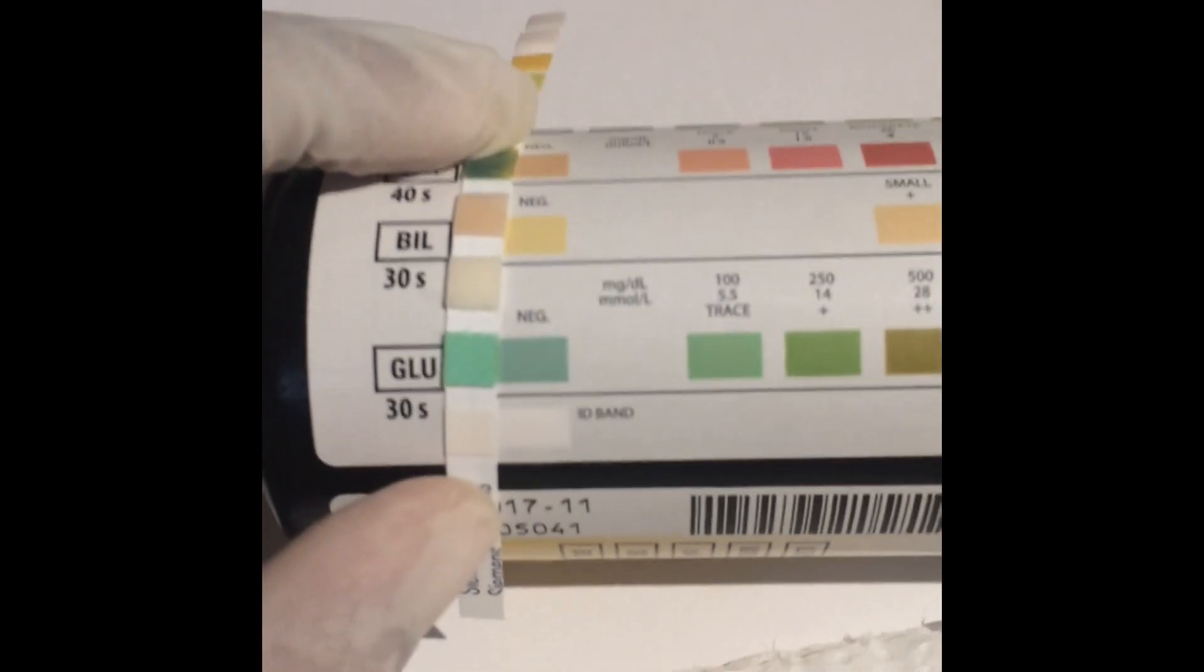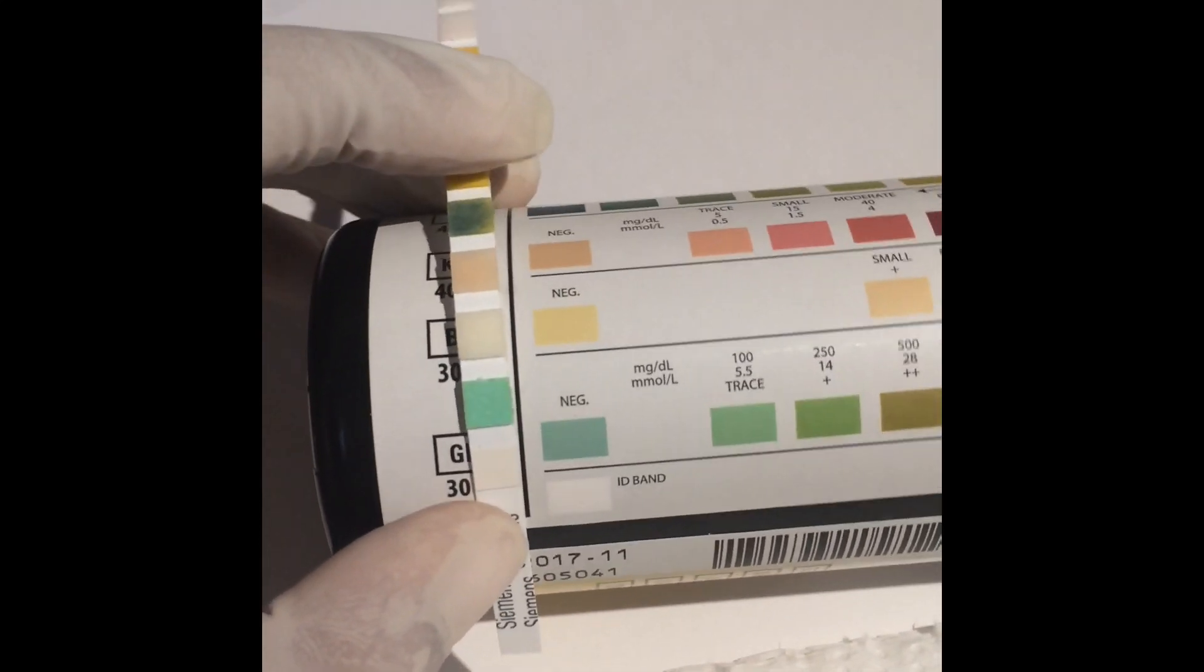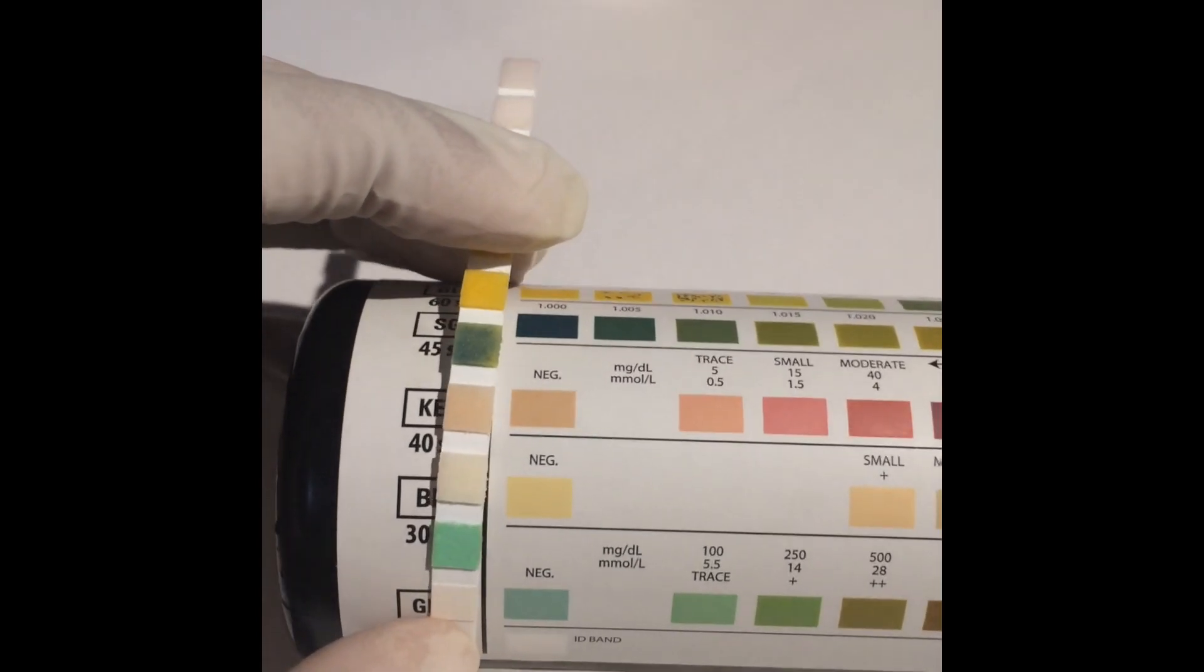First up, 30 seconds: glucose negative, bilirubin negative, ketones negative as well.